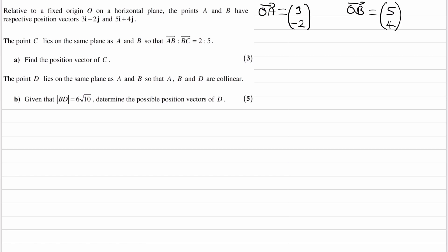We're told that point C lies on the same plane as A and B such that AB to BC is a ratio of 2 to 5, so we can write this ratio or these pairs of ratios.